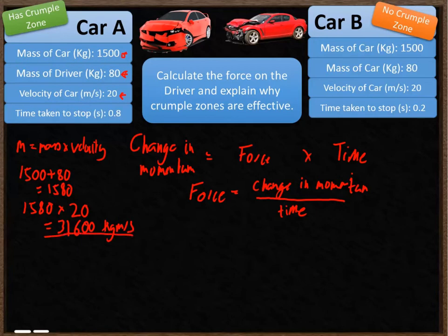The momentum of car B is exactly the same. The mass is the same for both the driver and the car. And the velocity is also the same. So I can use this value for car A and for car B.